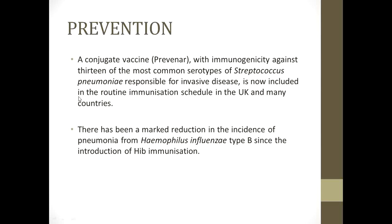Prevention includes hygiene, nutrition, and vaccinations. A conjugate vaccine — Prevenar — provides immunogenicity against 13 of the most common serotypes of Streptococcus pneumoniae responsible for invasive disease, and is included in the routine immunization schedule in the UK and many countries. In Pakistan, a pneumococcal conjugate vaccine is also given in the EPI — Extended Program of Immunization — schedule. There has also been a marked reduction in pneumonia from Haemophilus influenzae type b since the introduction of Hib immunization, which is also part of Pakistan's vaccination schedule.